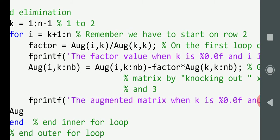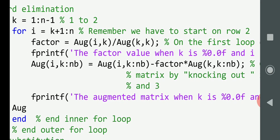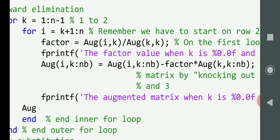Now, Aug(i, k:nb). So, what's i going to be? i is 2. And K colon nb is 1 to 4. So, the augmented matrix, row 2, columns 1 to 4, equals the right-hand side, the augmented matrix of i, which is 2, 1 to 4, minus the factor times the augmented k, comma, k colon nb, which is 1, colon 1 to 4. So, to recap, the new row 2, column 1 to 4, equals the right-hand side, the old row 2, columns 1 to 4, minus the factor times the augmented matrix of row 1, columns 1 to 4. So, you do that and then you print out the augmented matrix. So, that's just for the first loop of the inner loop. So, let's go back up.